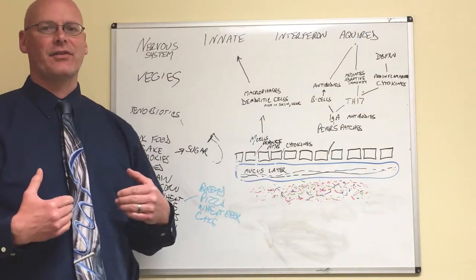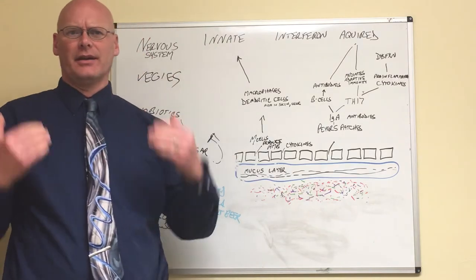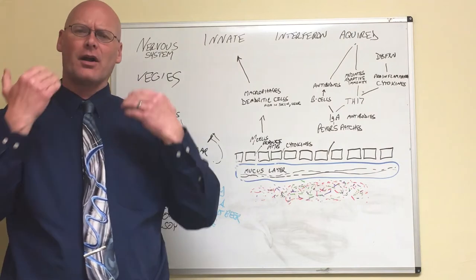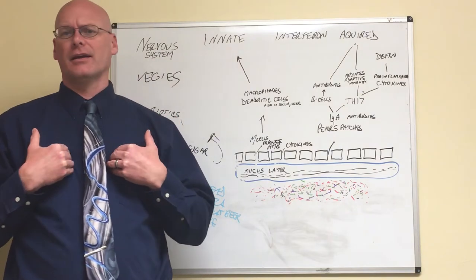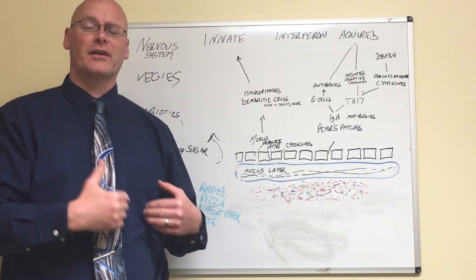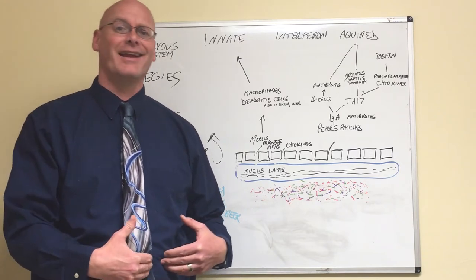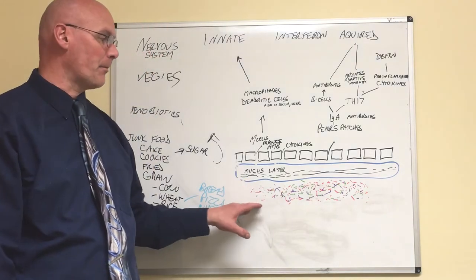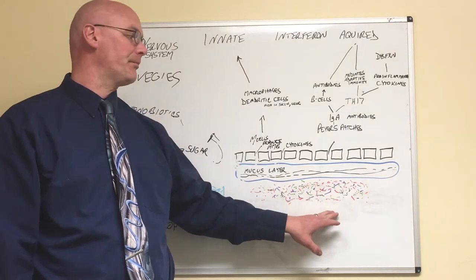Now, 90% of pathogens, viruses, bacteria, etc. enter our body via our alimentary tract, our mouth, esophagus, stomach, small intestine, and then it reaches the gut where it's met by our microbiome.